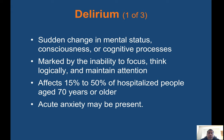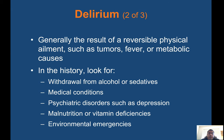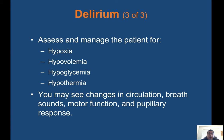Delirium involves sudden changes in mental status, consciousness, or cognitive processes marked by the inability to focus, think logically, and maintain attention. It affects 15–50% of hospitalized people aged 70 or older. Acute anxiety may be present. It is generally the result of reversible physical ailments such as tumors, fever, and metabolic causes. In the history, look for withdrawal from alcohol or sedatives, psychiatric disorders such as depression, malnutrition or vitamin deficiencies, and environmental emergencies. Assess and manage the patient for hypoxia, hypovolemia, hypoglycemia, and hypothermia. You may see changes in circulation, breath sounds, motor function, and pupillary response.